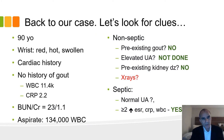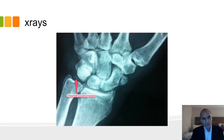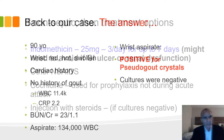Let's get back to the case and look for the clues we just mentioned. Age of 90 doesn't help. A red, hot, swollen wrist does not help. Cardiac history has no influence. No history of gout might tend you toward infection. Elevated white count and CRP together might tend you toward infection. Normal creatinine and BUN mean no renal dysfunction. The aspirate of 134,000 may or may not suggest infection — it can be just as high in gout. On x-rays, there was chondrocalcinosis — calcification of the TFCC. The next day, the wrist aspirate was positive for pseudogout crystals, cultures were ultimately negative, and this patient did not have an infection — he had acute pseudogout.